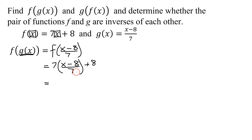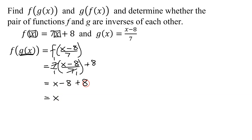So now all I have to do is simplify this expression. Since x minus 8 over 7 is a fraction, I'm going to turn the 7 into a fraction by dividing it by 1. Since I'm multiplying these two fractions, I can reduce my two 7s, and I get 1 times x minus 8 divided by 1, which is just x minus 8. Then don't forget your plus 8. So I'm going to get x, and then negative 8 plus 8 is 0. So f of g of x is equal to x.